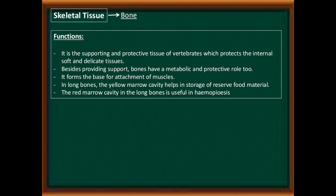Functions of bone: It is the supporting and protective tissue of vertebrates, protecting internal soft and delicate tissues while providing support. Bones also have metabolic and protective roles and form the base for attachment of muscles. In long bones, the yellow marrow cavity stores reserve food materials. The red marrow cavity in long bones is the site of hemopoiesis — the formation of blood cells.